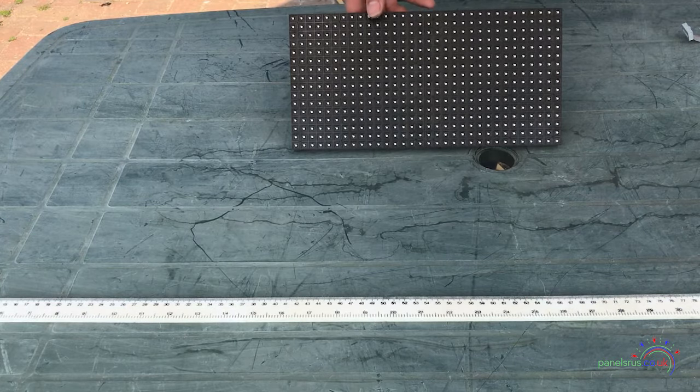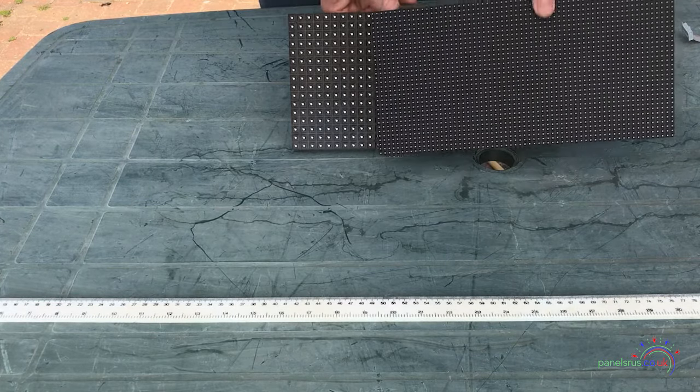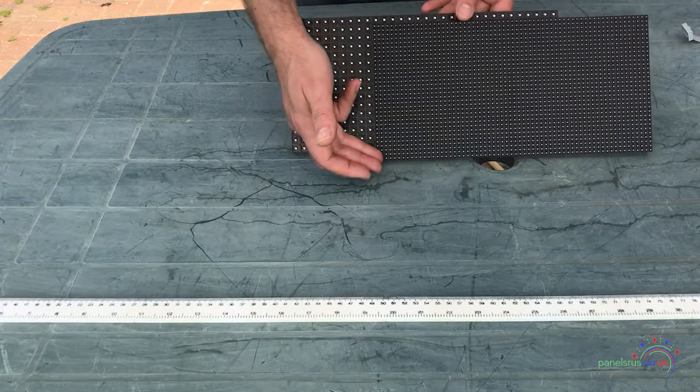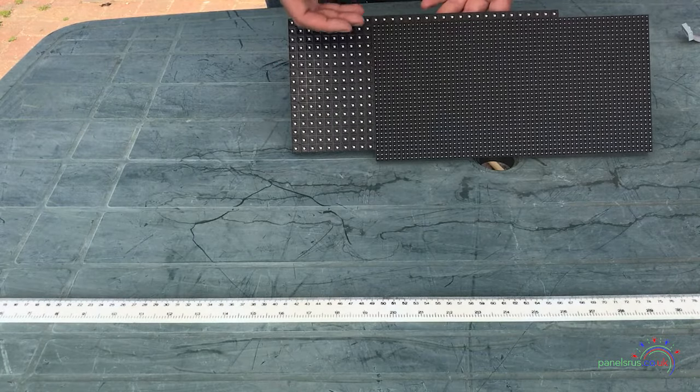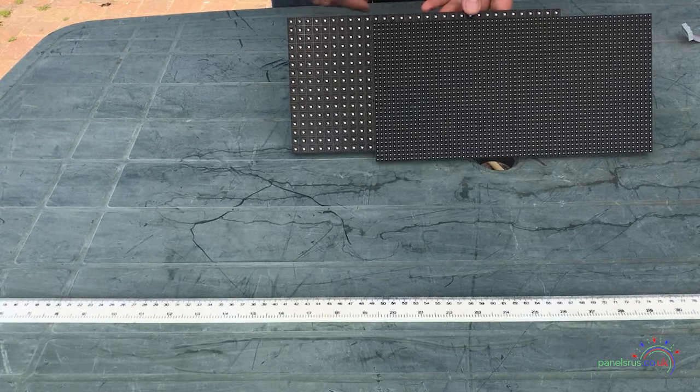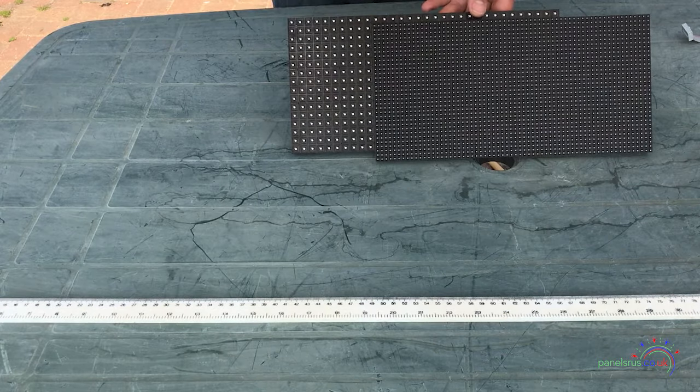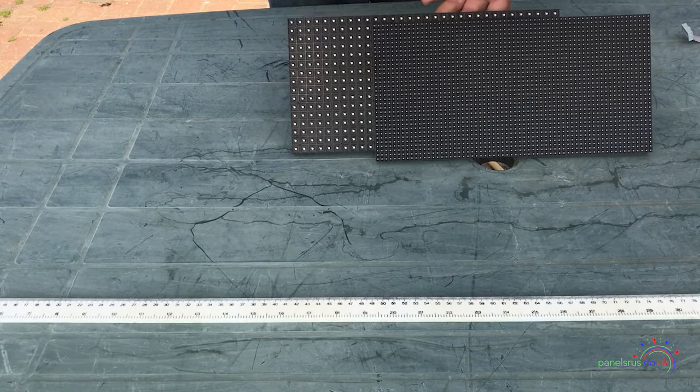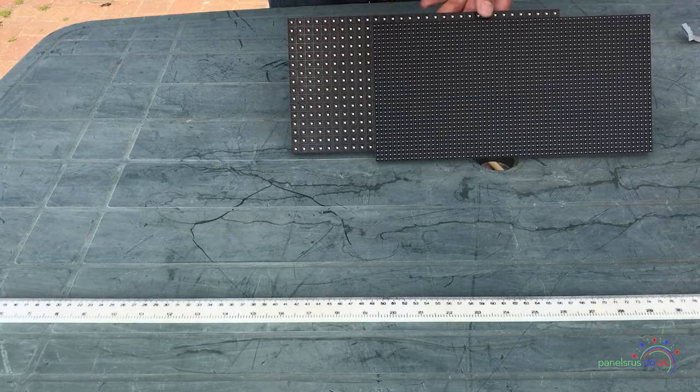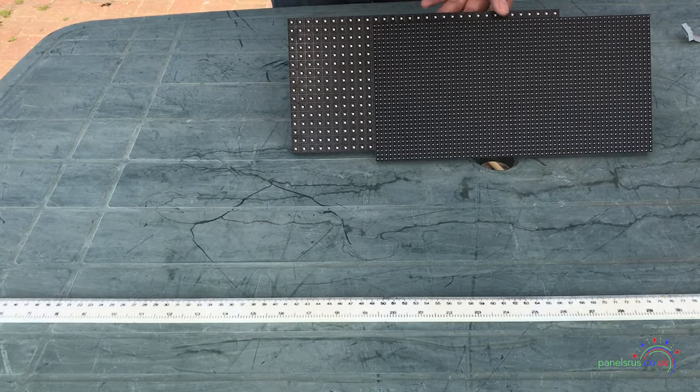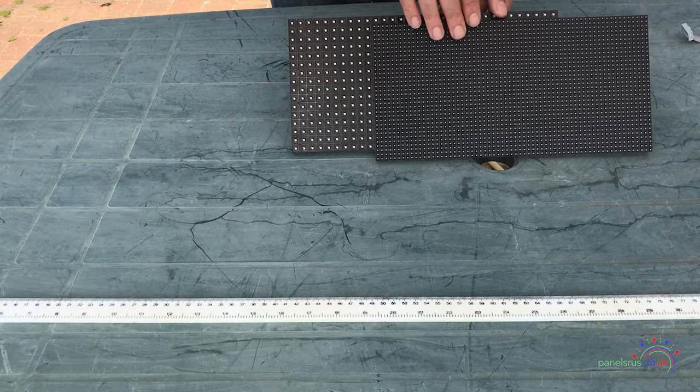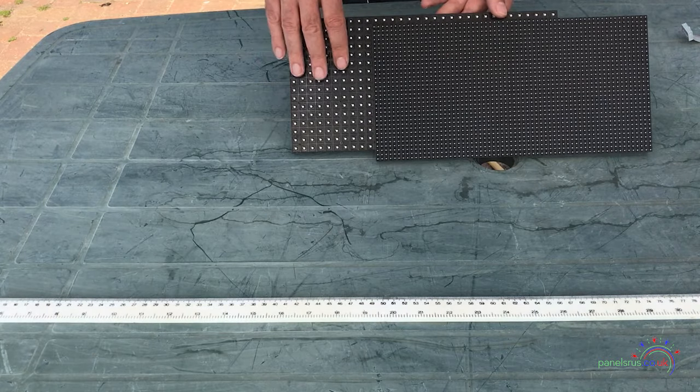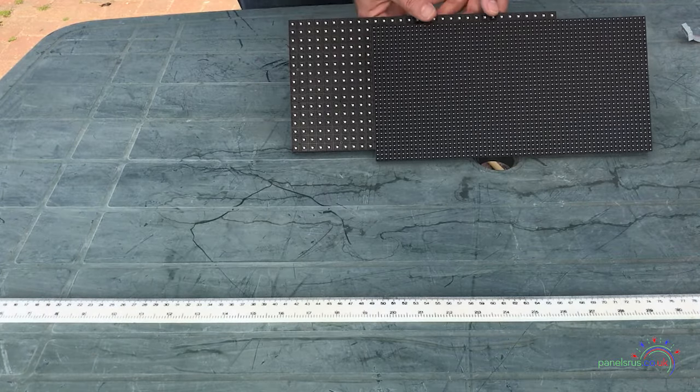The next common panel that you'll find is the P5. And exactly as the name suggests, we have pixels at 5 millimeter spacing, both vertically and horizontally. This gives us in this case 32 pixels tall, so double the P10, and 64 wide, so again double. And that gives us four times the number of pixels. So 2048 pixels on a standard P5 versus the 512 on a P10.